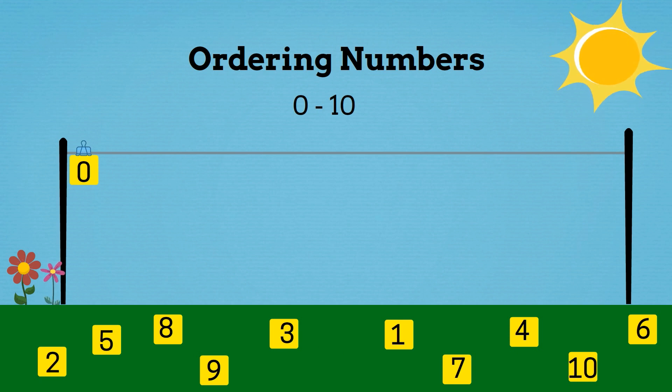Now what number do you think we could put at the end of the washing line? What's the highest number? It's 10. Yes, 10 is the highest one of the numbers. So we'll put it at the end of the washing line.